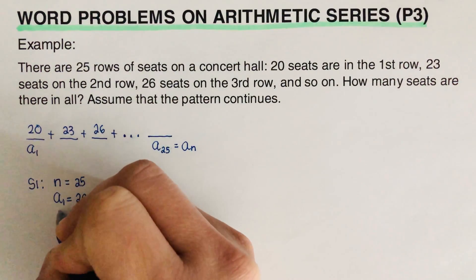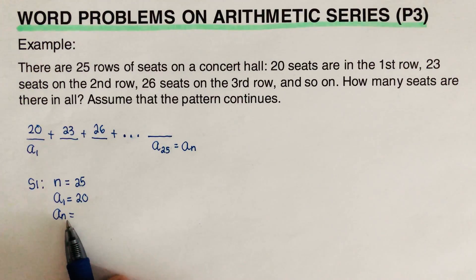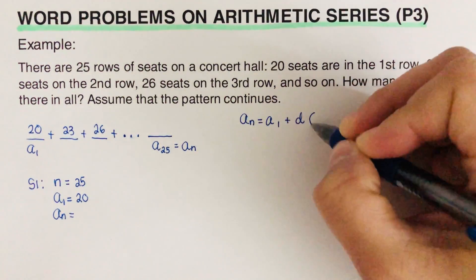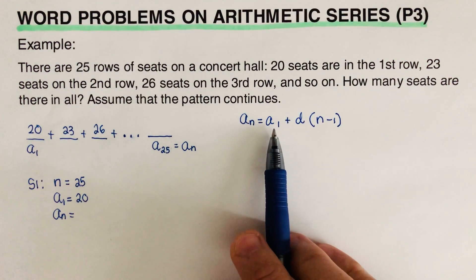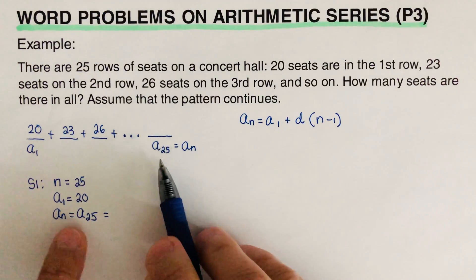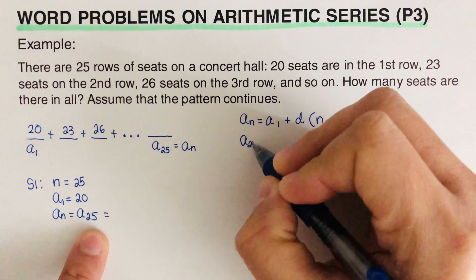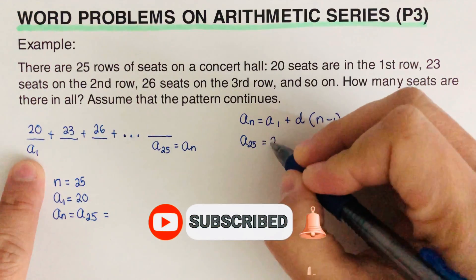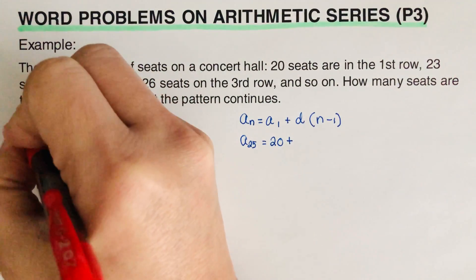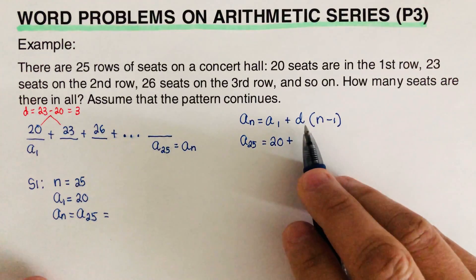Our a-sub-n, the last term corresponding to a-sub-25, is missing, but we can solve for it. The formula for a-sub-n is a-sub-n = a-sub-1 + d(n − 1). We're looking for a-sub-25. So a-sub-25 = 20 plus the common difference, which is 23 minus 20, equal to 3.